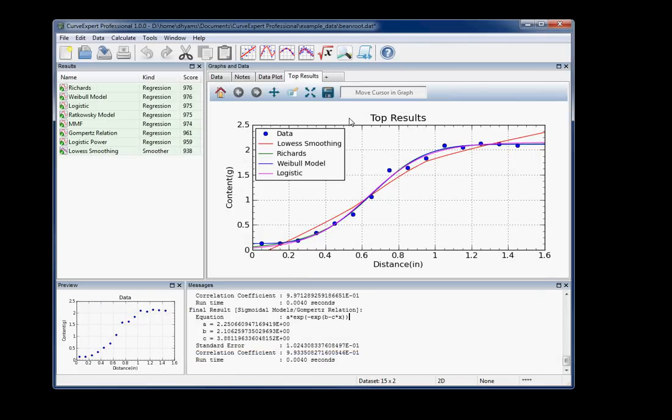Now you can also get to that result window in various ways. I showed you how to get to it straight from the plot. You can also double-click here on any result that's in the results list to get the same thing, or you can right-click on any of those results and select Details.